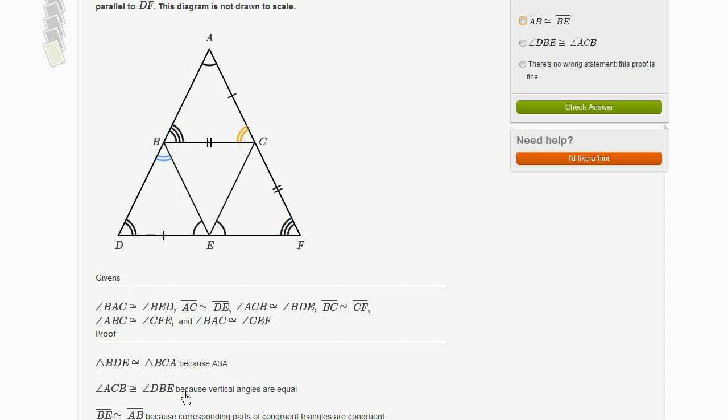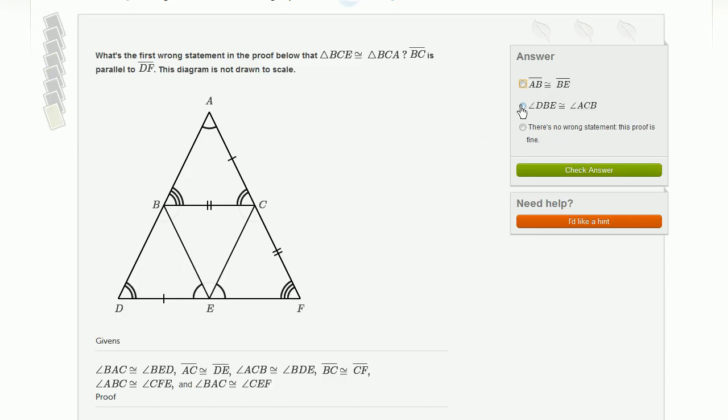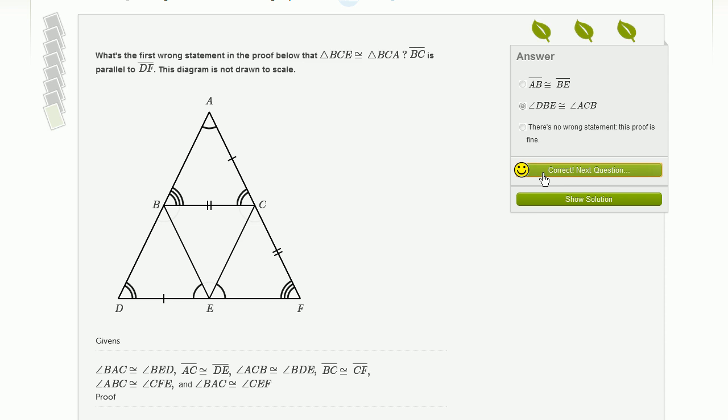We're actually done. We have found the incorrect statement. This is not true. ACB is not congruent to DBE because of vertical angles. So the wrong statement of this proof was the statement that tries to do that because of vertical angles. Let's check our answer and it is correct.